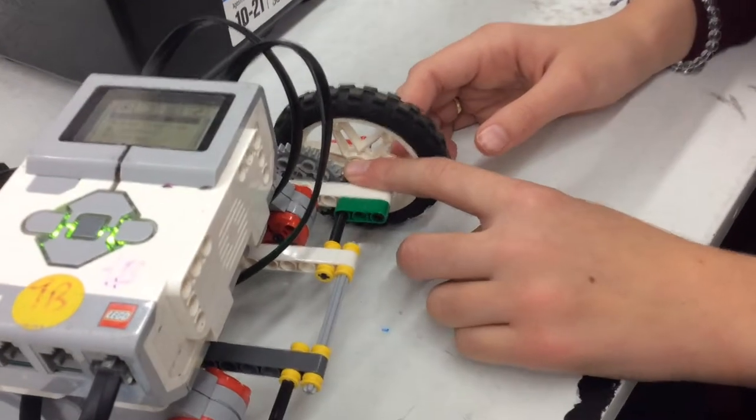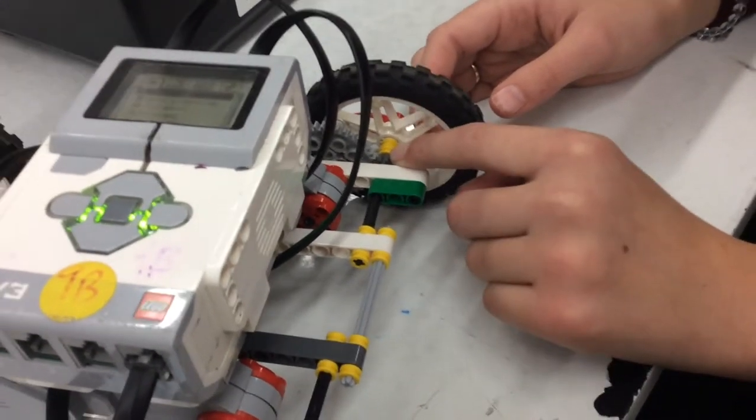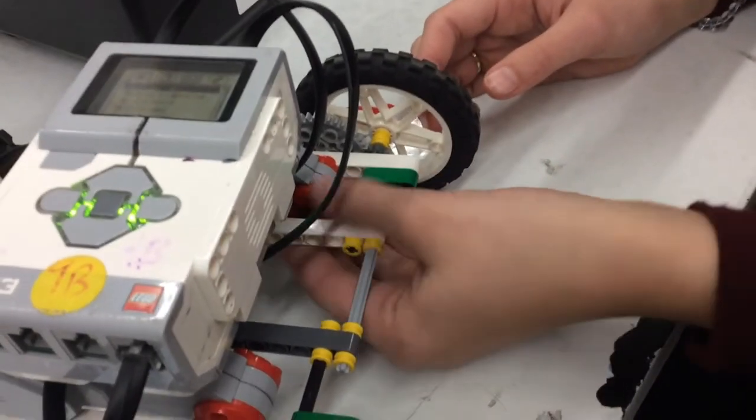The lead gear is attached to the following gear. For every one turn of the lead gear, the following gear turns 5 times, as you can see.